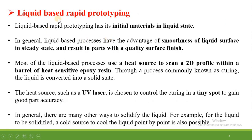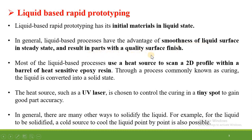Now let us understand the concept of liquid-based rapid prototyping. Rapid prototyping processes are typically divided into three types: liquid-based rapid prototyping, solid-based rapid prototyping, and powder-based rapid prototyping. In this session we discuss liquid-based rapid prototyping. Liquid-based rapid prototyping has its initial material in the liquid state. In general, liquid-based processes have the advantage of smoothness of the liquid surface in steady state, resulting in parts with high surface finish or good quality surface finish.